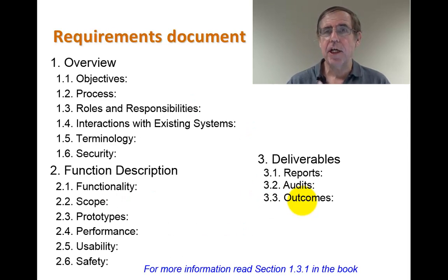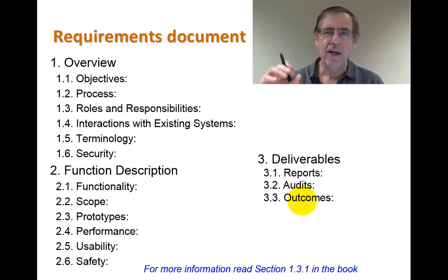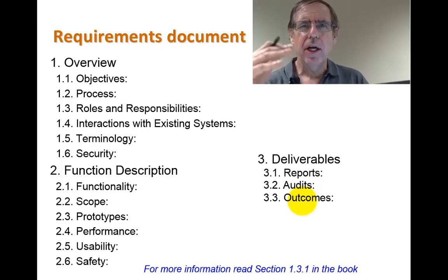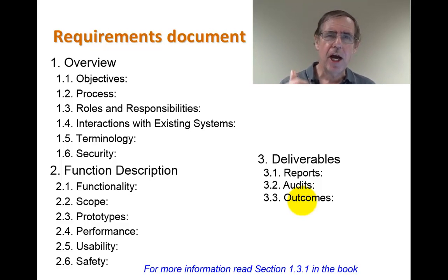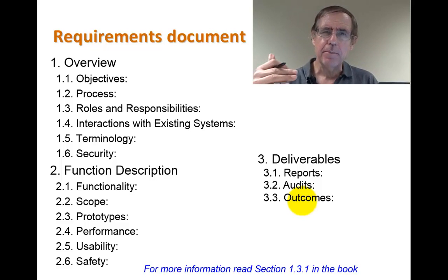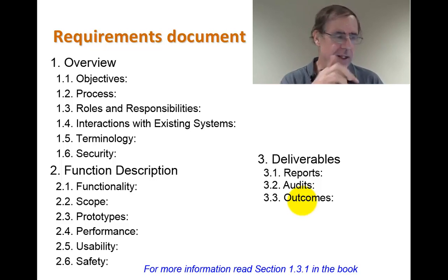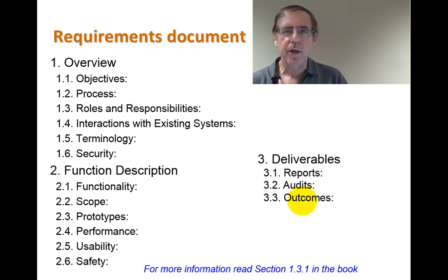Now let's talk about the requirements document. This is a modifiable, fluid, high-level contract between you and your vendor — whether it be the customer you're writing the software for or the buyer of the machine. Rather than go over this in theory, let me open up the requirements document for lab three and we'll go through that.